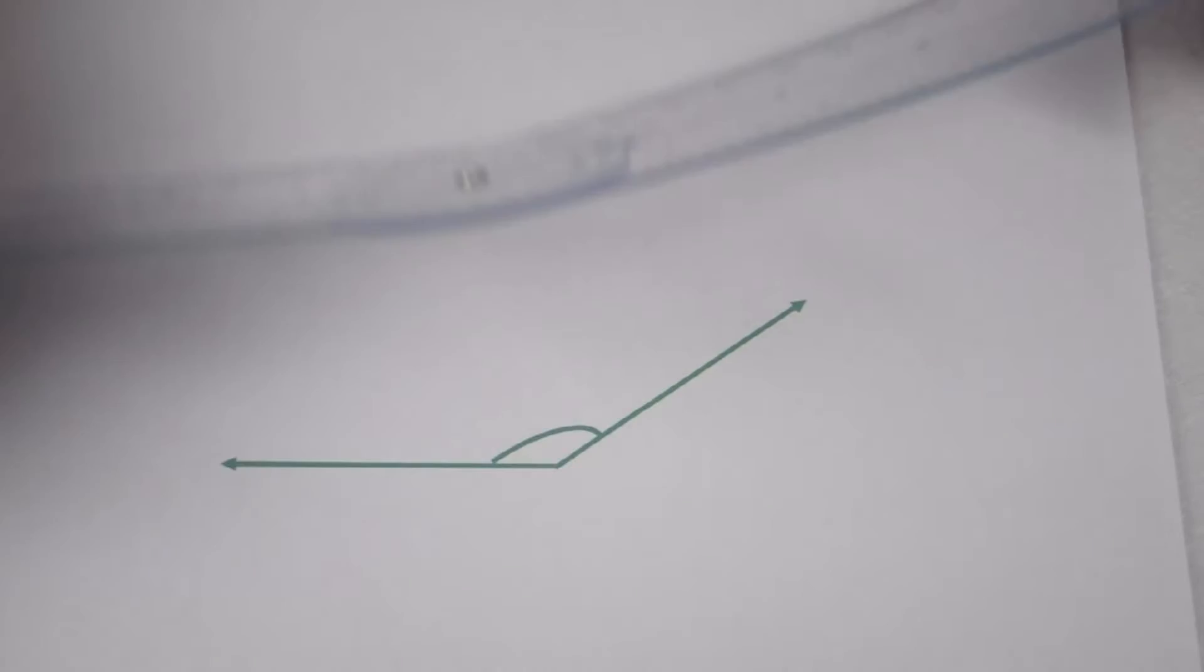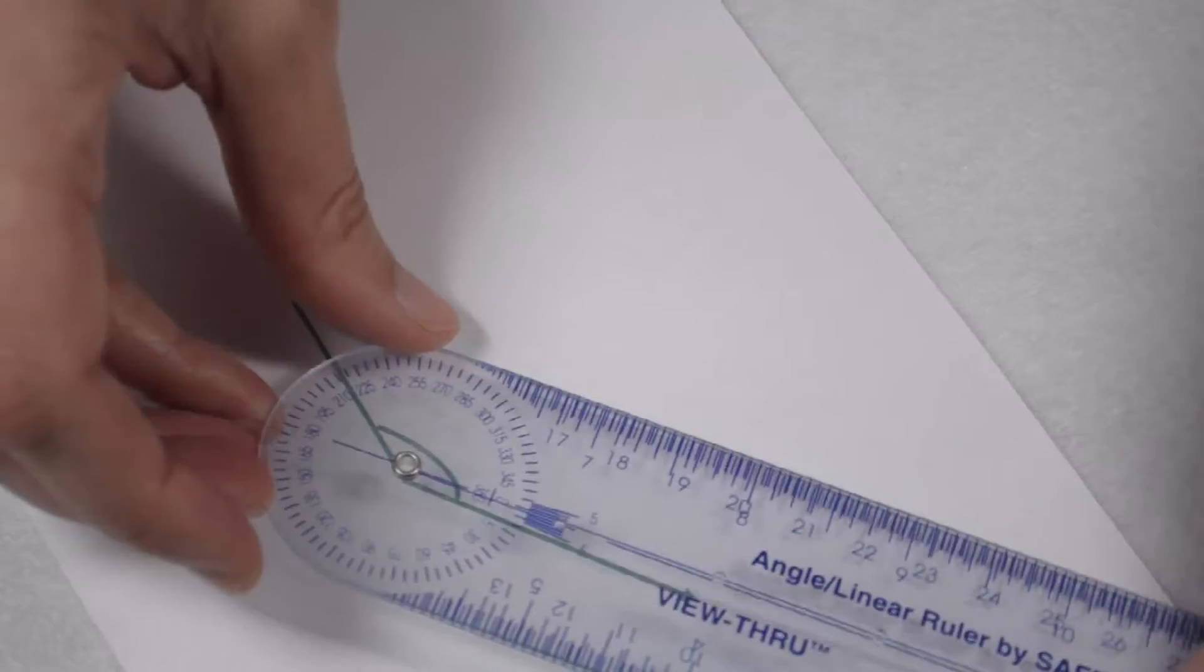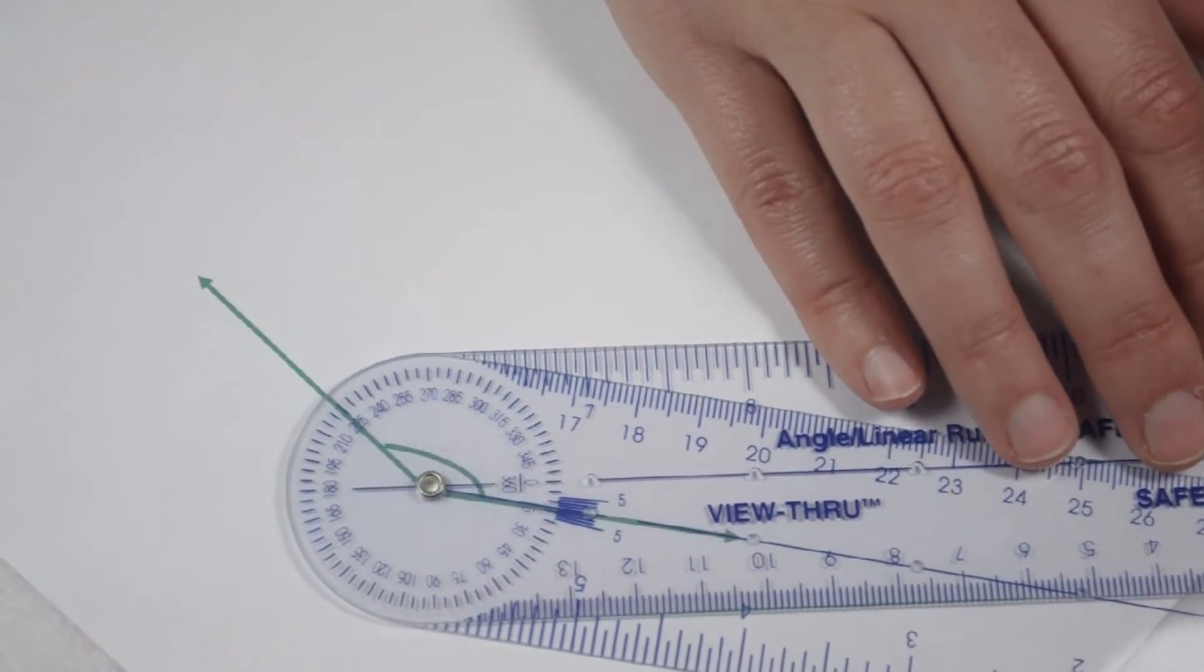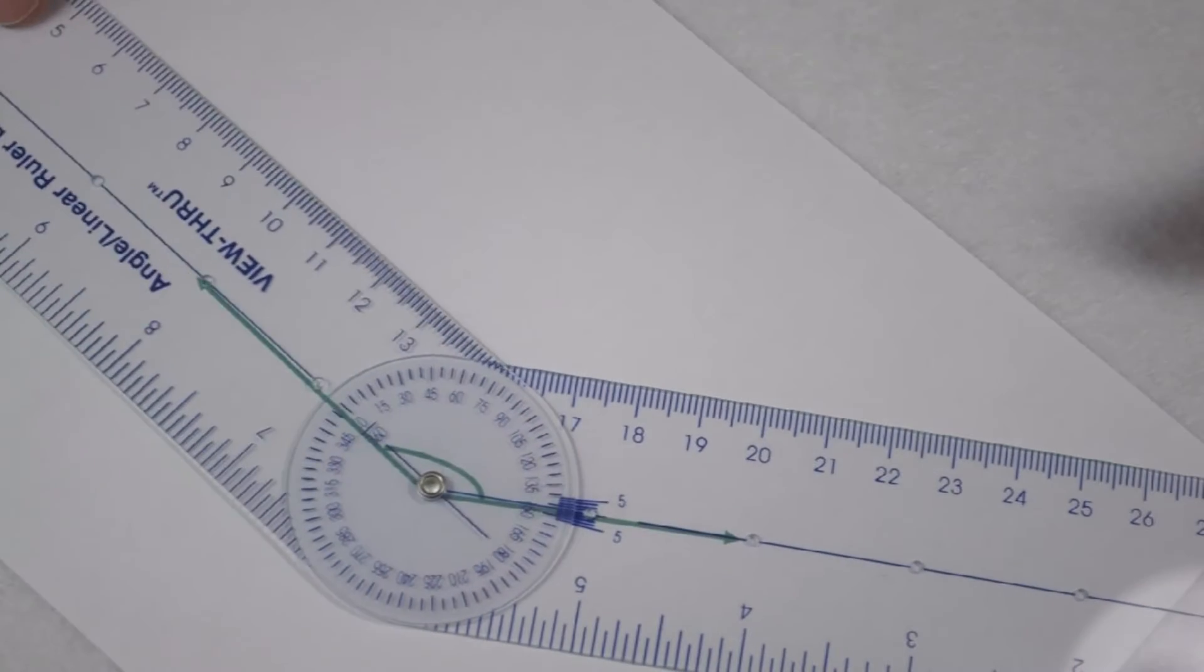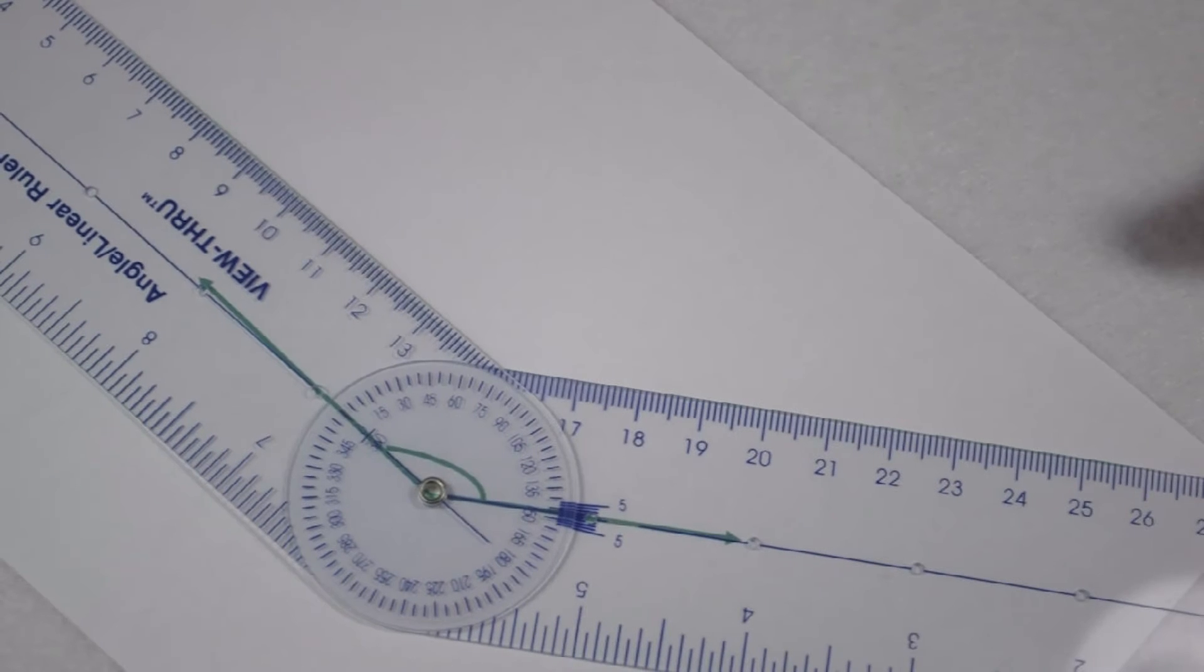Now, if you didn't like having to turn your angle ruler, your other option is to simply rotate your paper so that your bottom ray faces the correct direction. When you do, line up your vertex like always, swing it around, and sure enough, we still come out at 145 degrees.